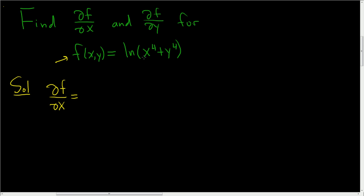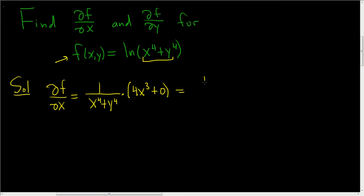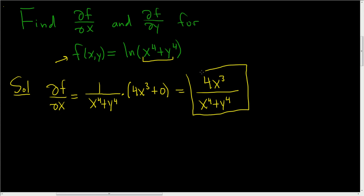We have the natural log of x to the fourth plus y to the fourth. So this derivative is 1 over x to the fourth plus y to the fourth, times the derivative of the inside piece. The derivative of x to the fourth is 4x cubed, and the derivative of y to the fourth with respect to x is 0 because we're treating y to the fourth as a constant. So this ends up being 4x cubed divided by x to the fourth plus y to the fourth. That is the partial derivative of f with respect to x.